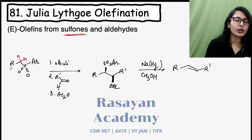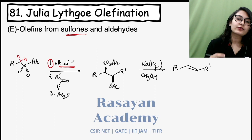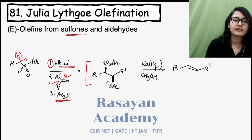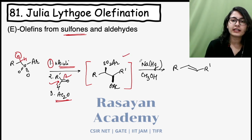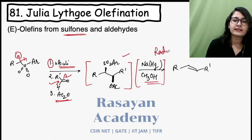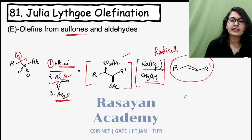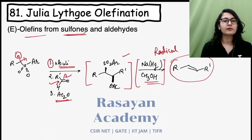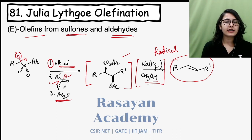Here we are using the sulfone because it will stabilize the negative charge very nicely. So onto this alkyl sulfone, we react n-butyllithium, which is a base that removes a proton from the alpha carbon. This carbanion then attacks on the aldehyde, followed by the O⁻ getting an acyl group from acetic anhydride to give an intermediate. To this intermediate, if you provide sodium amalgam in the presence of an alcohol, it follows a radical mechanism and gives the more stable trans-alkene product.